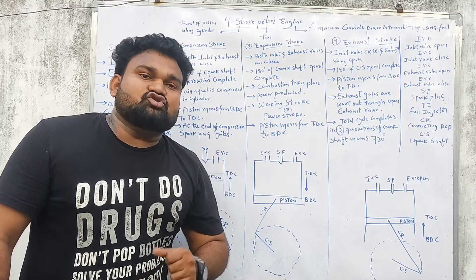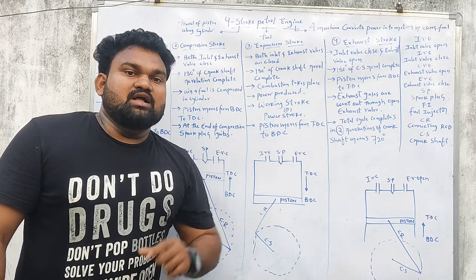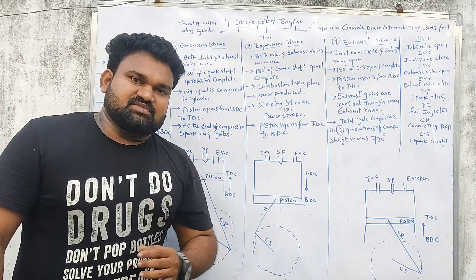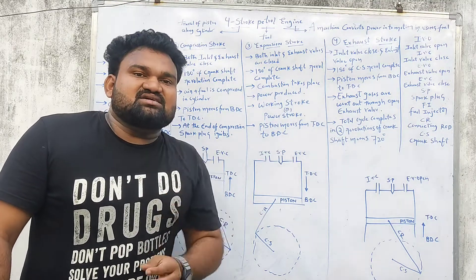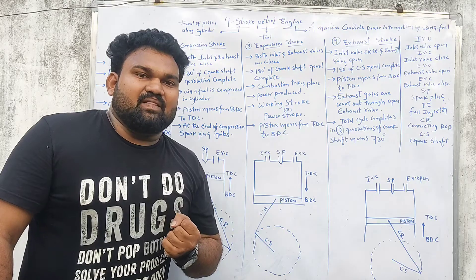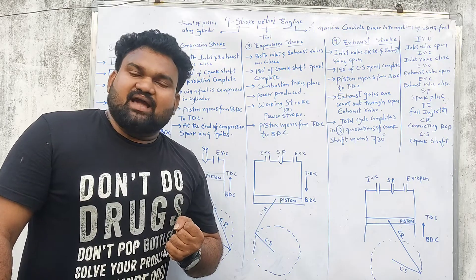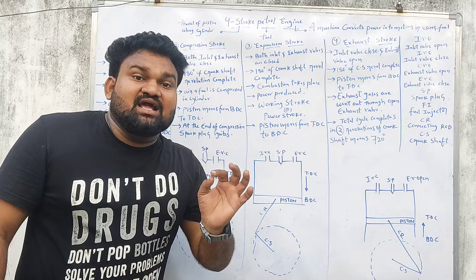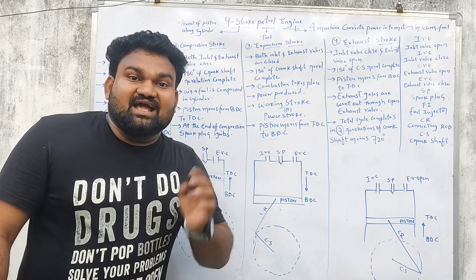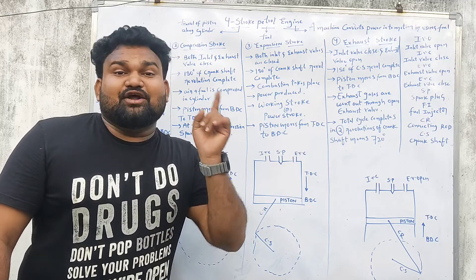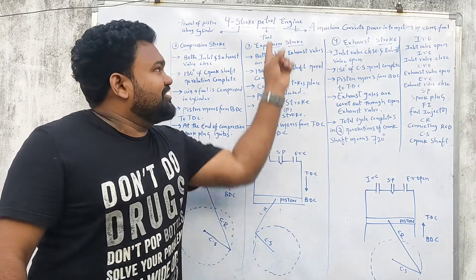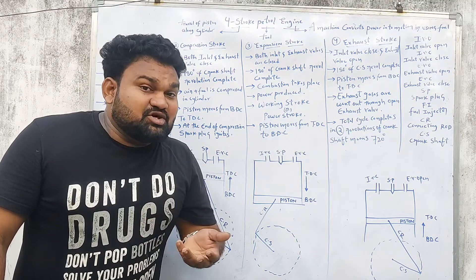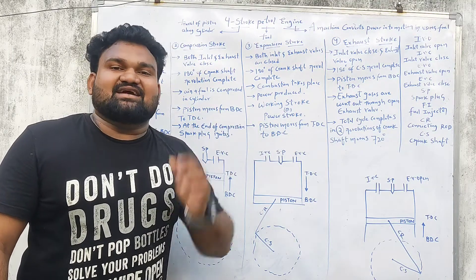There are four strokes in a four-stroke petrol engine. Number one is called the suction stroke. In the suction stroke, air plus fuel mixture enters. The fuel is petrol. The air plus fuel mixture comes from the carburetor.